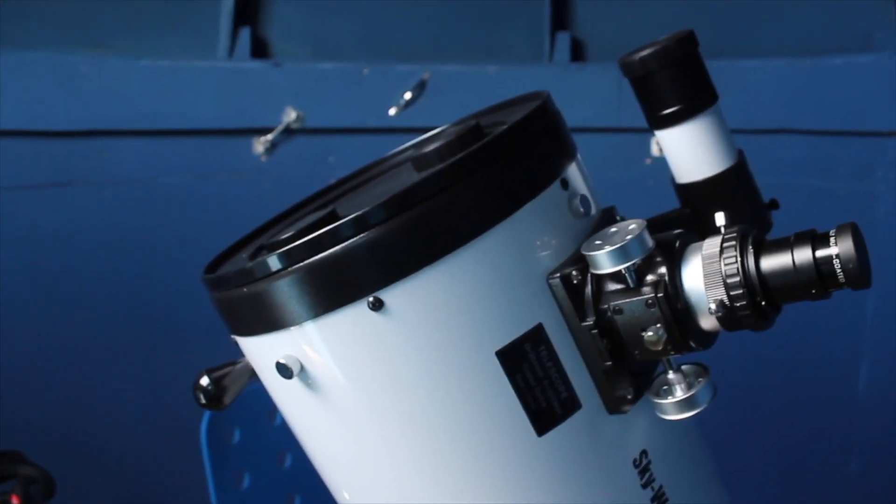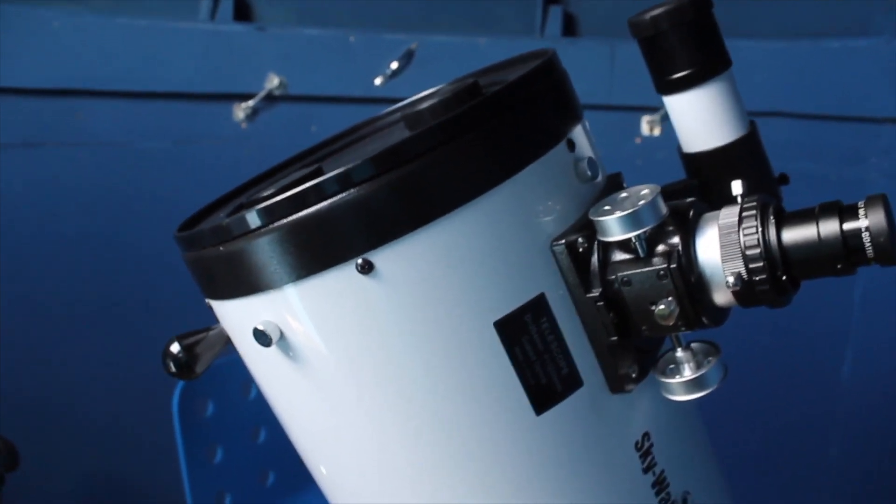So this is Luna, my 10-inch Dobsonian Skywatcher Telescope. If we open up the main cap, this is where the primary and secondary mirrors are situated.